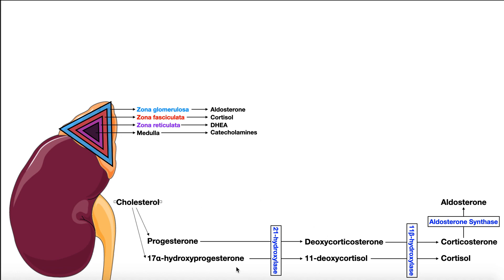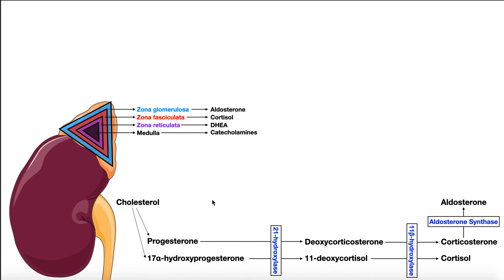Cholesterol can be processed through this biosynthetic pathway to make cortisol and aldosterone. The main reason I show this is that the pathway to make cortisol is very similar to the pathway to make aldosterone — a bunch of these enzymes are actually shared between the two. So sometimes when you have an insufficiency of cortisol, you might also have an insufficiency of aldosterone, and the same goes for a hypersecretion of cortisol potentially causing a hypersecretion of aldosterone.